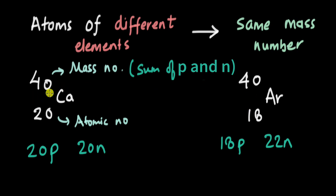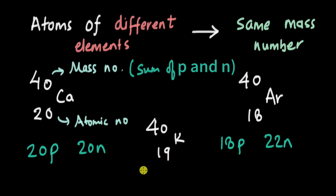So these are atoms of two different elements but they have the same mass number, that is 40. We can extend this to say they have the same atomic mass, because the mass of protons and neutrons are almost the same — so if the mass number is the same, the atomic mass has to be the same. We can also add potassium to this list: potassium has 19 protons and 21 neutrons, and again the mass number is 40.